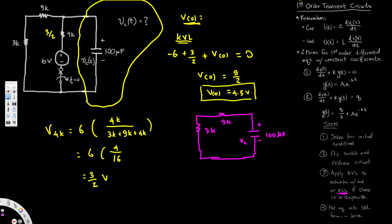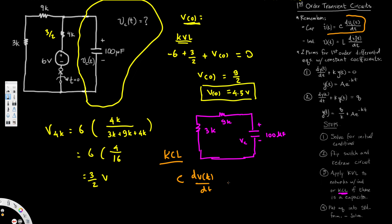Since we have a capacitor, we apply Kirchhoff's Current Law. Using the capacitor current equation, we write: C·dv(t)/dt + v(t)/R_total = 0, where the total resistance is 3k + 9k = 12k.